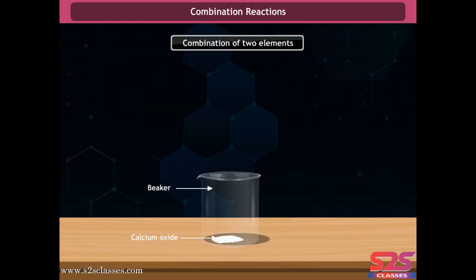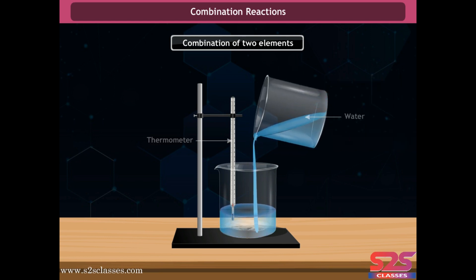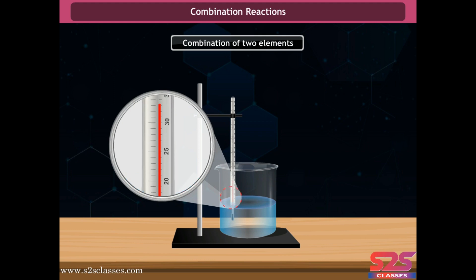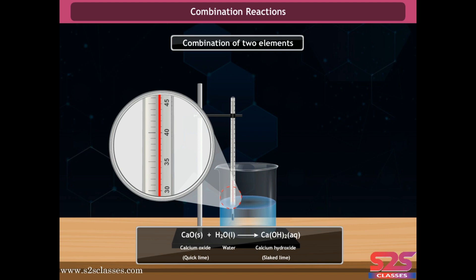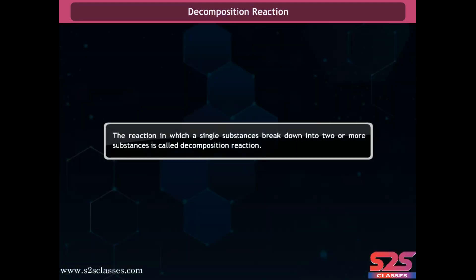Take a small amount of calcium oxide (quick lime) in a beaker and slowly add water to it. You will observe that the temperature rises. Calcium oxide, when mixed with water, reacts to form calcium hydroxide (slaked lime). Hence in combination reactions, two or more compounds combine to produce only one product. Generally, combination reactions are exothermic in nature, meaning energy is released.